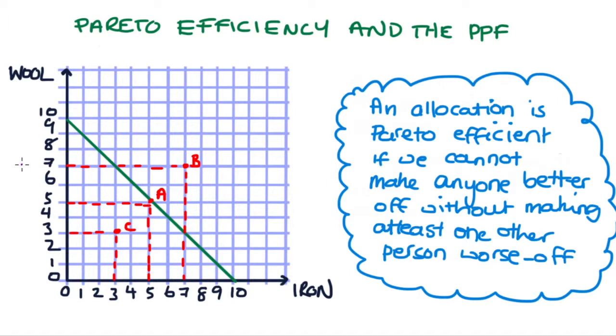Let's just say that as an economy we decide we would like to produce seven tons of wool, so that amount of wool. And let's just say that we started from an allocation that is to the left hand side of the PPF, so inside the frontier, maybe a point like C.